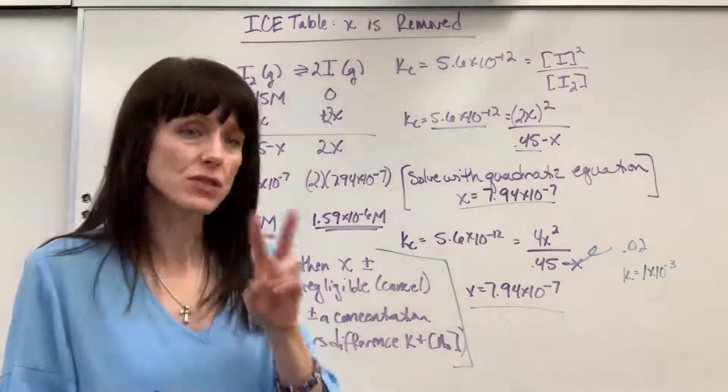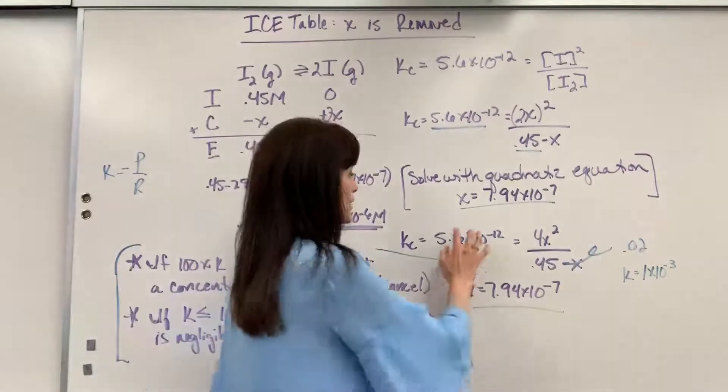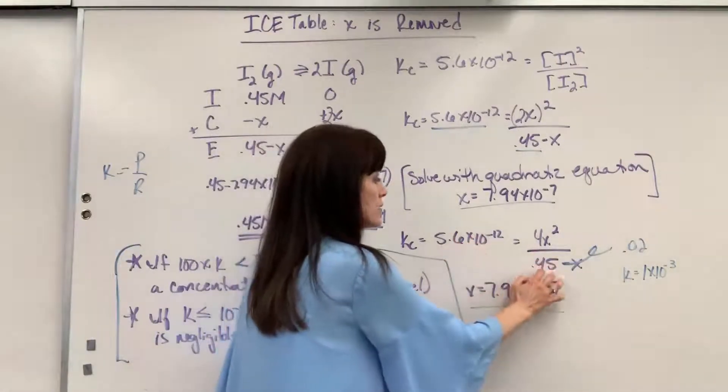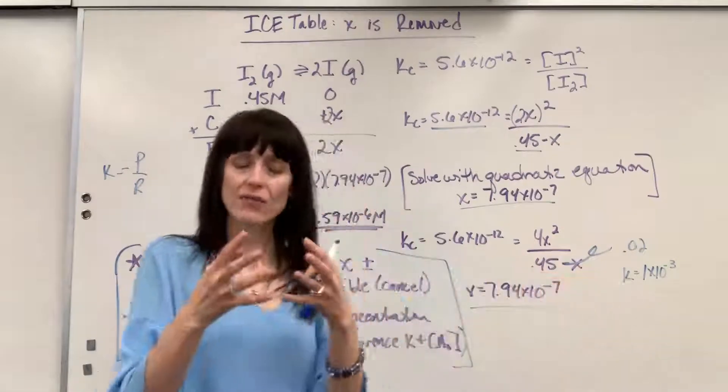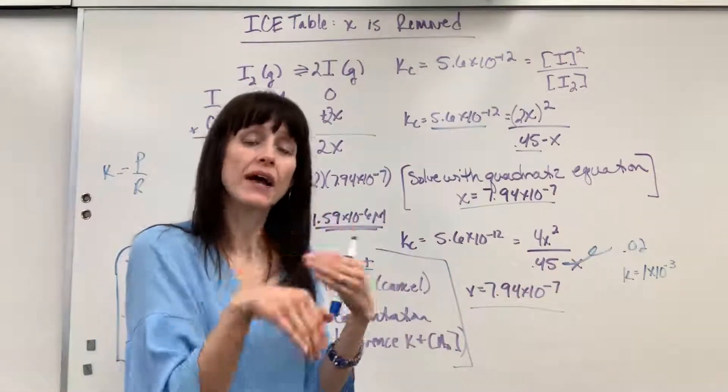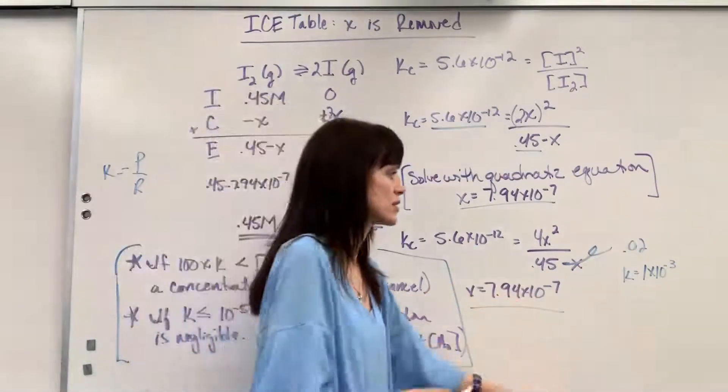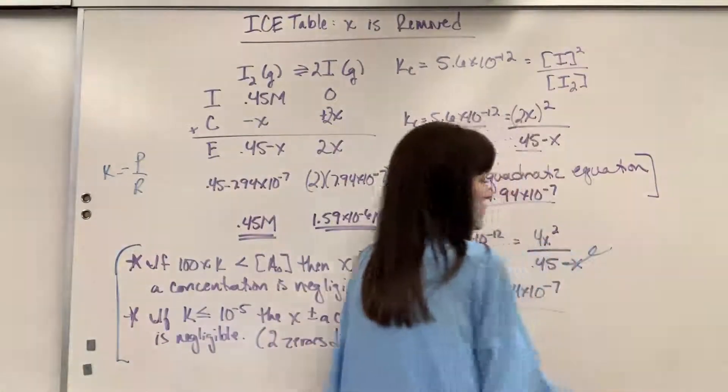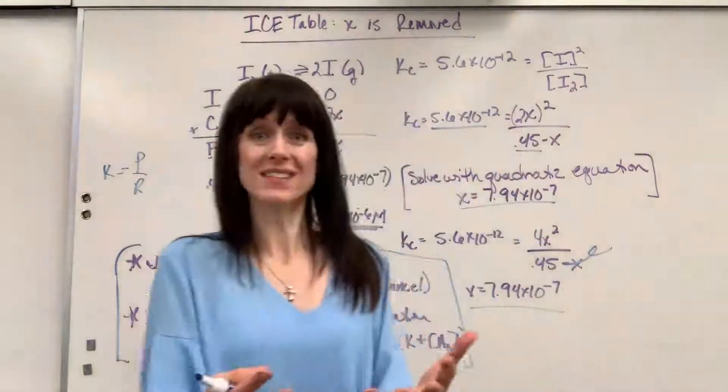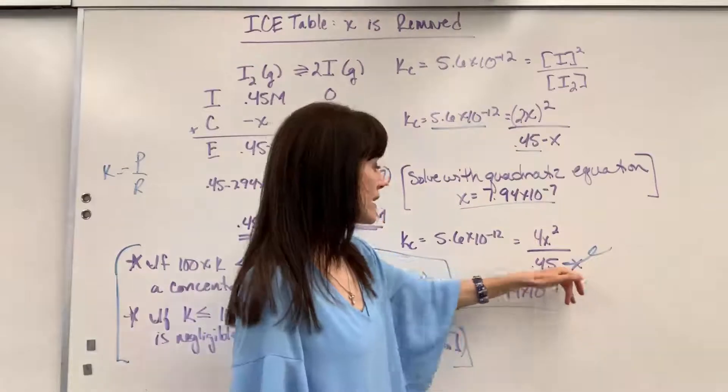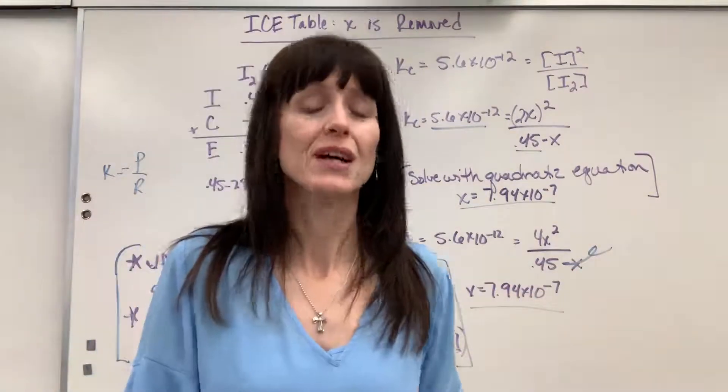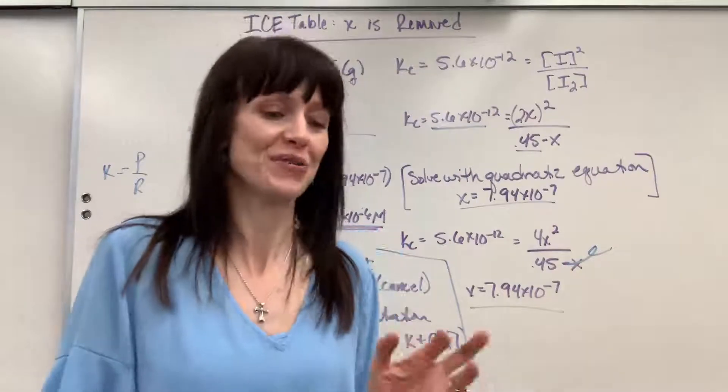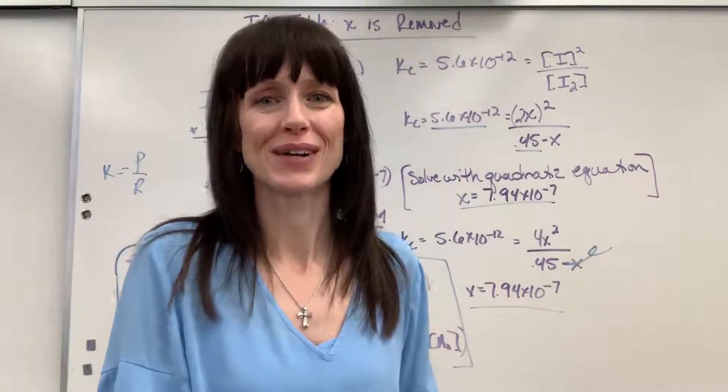You have to have at least a difference of two zeros, again, between the K value and your concentration. And if you do, perfect. Whatever x is next to being added or subtracted from a concentration, cancel it out. Count it as negligible, because honestly, when you add or subtract that x from the concentration, it's so small, it won't change the concentration. This will save you a ton of time, because you won't have to do the quadratic equation.